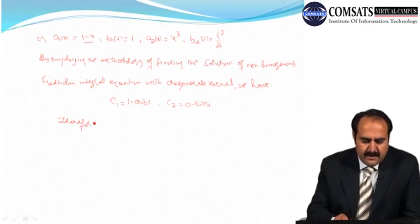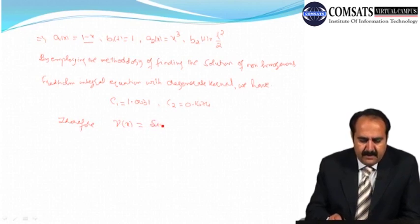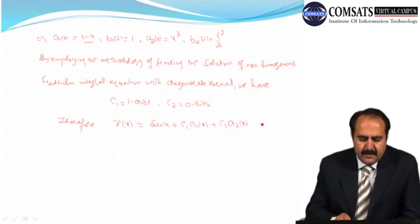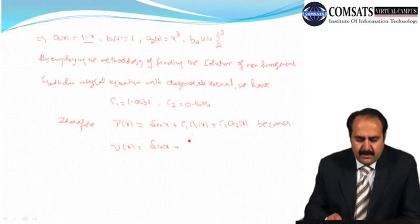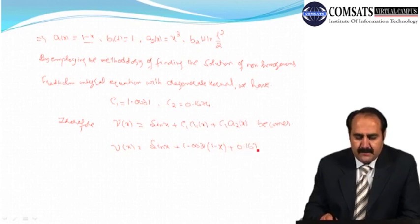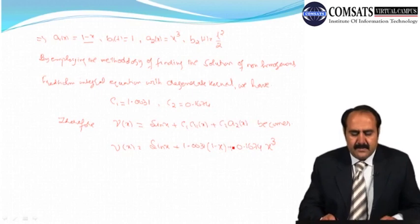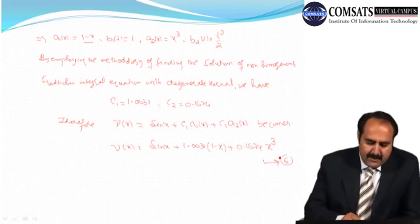Therefore, the approximate solution is: ν(x) = sin x + c₁·a₁(x) + c₂·a₂(x) = sin x + 1.0031(1 − x) + 0.1674·x³ — equation (6). This is the approximate solution to the original integral equation.